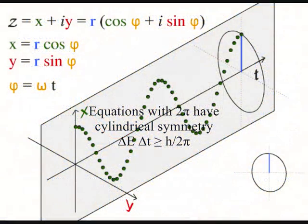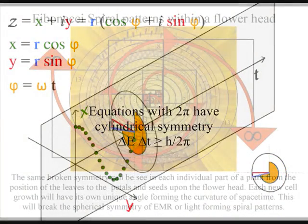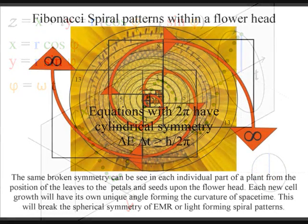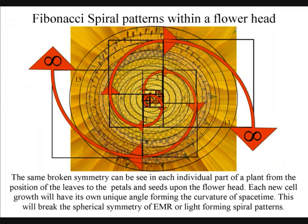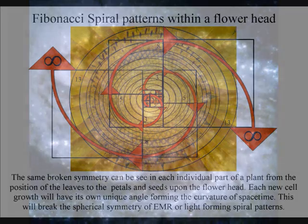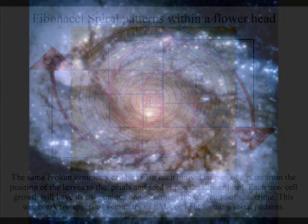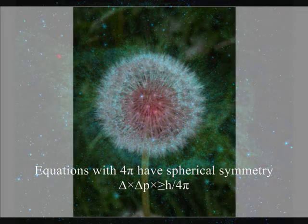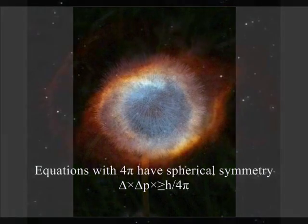We have a universal dynamically forming geometry, creating symmetry from simple dynamics. The forward momentum of electromagnetic radiation will place light-charged particles that repel, becoming equally displaced along the curvature of their own created space-time. The same broken symmetry can be seen in each individual part of a plant — from the position of the leaves to the petals and seeds upon the flower head. Each new cell growth will have its own unique angle, forming the curvature of space-time; therefore we see the same patterns in plant life as we do in deep space, formed by the same universal geometry. It is this dynamic universal geometry that human mathematics is based upon.